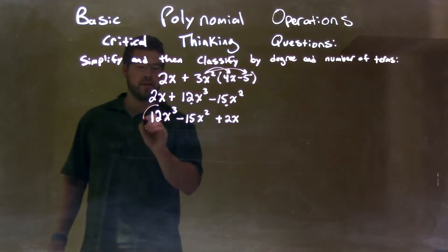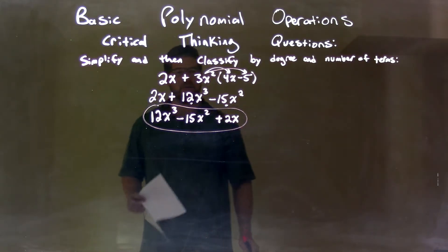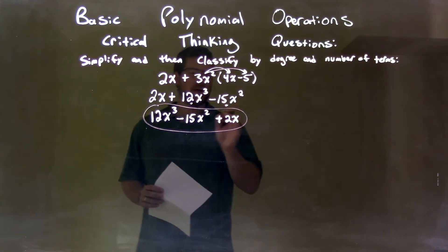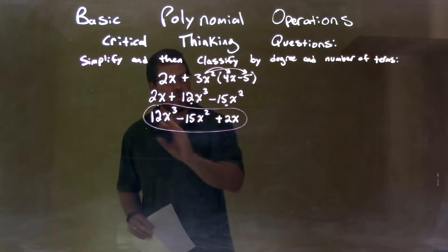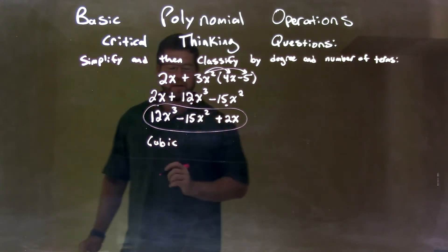So now we have that final answer. This is what simplify: 12x to the third minus 15x squared plus 2x. Now our highest degree here is to the third power, so we're classifying this as a cubic.